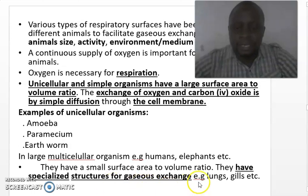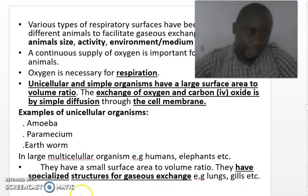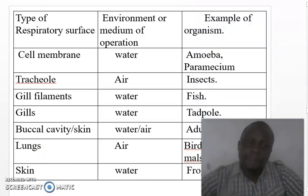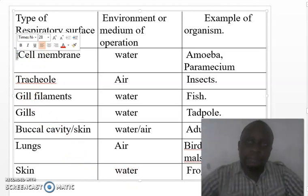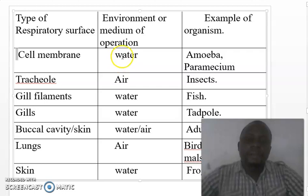Examples of respiratory organs are the lungs, the gills, buccal cavity, and the skin. In our next session we shall discuss the various respiratory organs. The type of respiratory organ depends on where the organism lives. The cell membrane is solely for those organisms which are single-celled. These organisms in most cases live in water, so the cell membrane is a respiratory surface where gaseous exchange occurs. Examples of single-celled organisms are amoeba and paramecium.